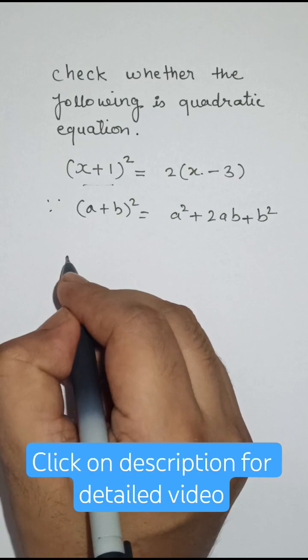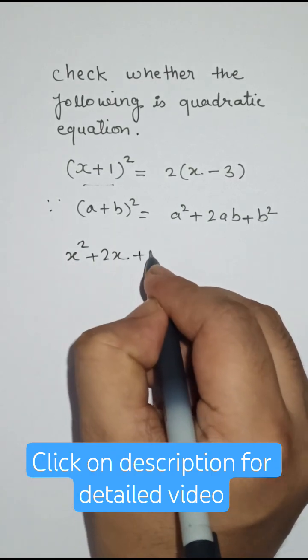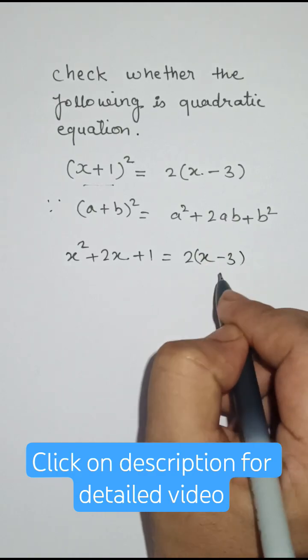Applying this formula: x² + 2x + 1 = 2x - 6.